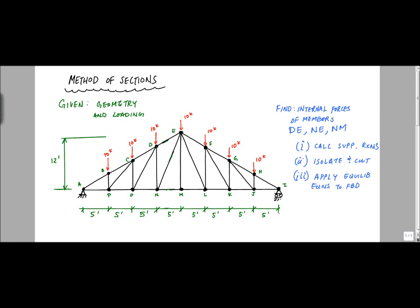I want to know the internal forces of members DE, NE, and NM, which are here — DE, NE, and NM. And the way we're going to go about doing this, as with any method of sections problem on a truss, is to calculate the support reactions of the truss. These are the 3 support reactions: AY and AX at this support, and IY — a vertical reaction on that roller.